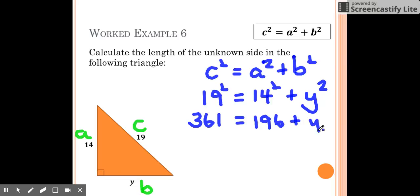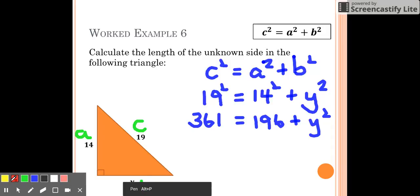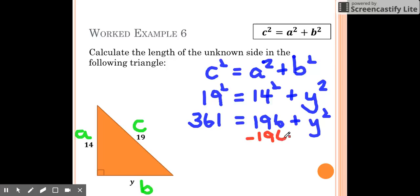Now we've got Y on this right-hand side and we want to get it on its own, so we have to get rid of this 196. If we take 196 from this side, when we solve an equation we must take 196 from the other side.